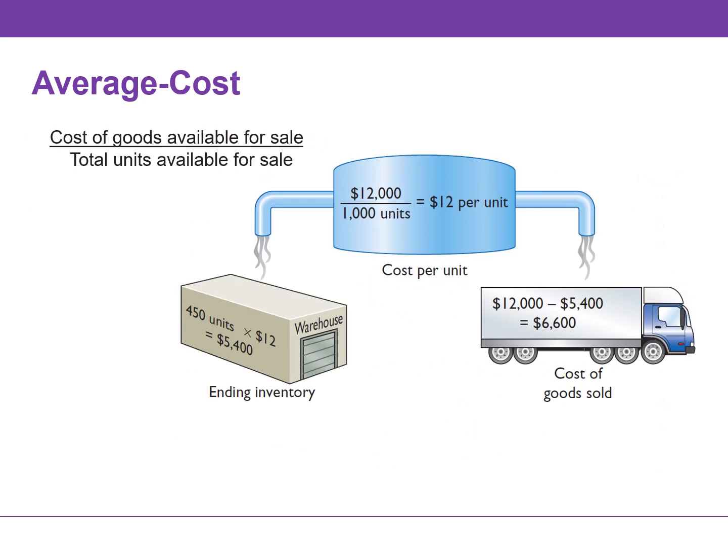We can verify the cost of goods sold by multiplying the units sold — 550 units — times the weighted average unit cost of $12 to arrive at a cost of goods sold of $6,600.